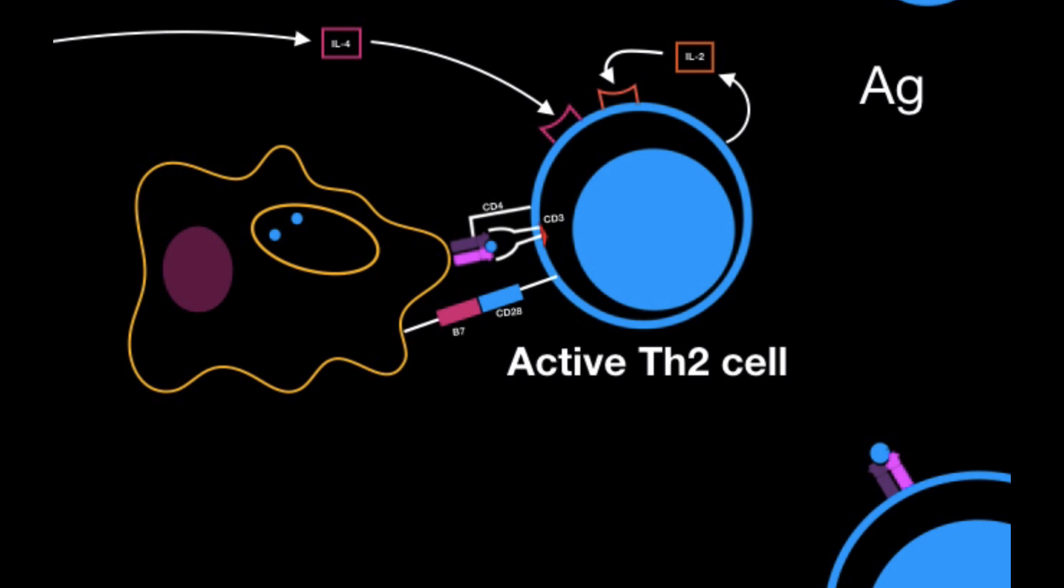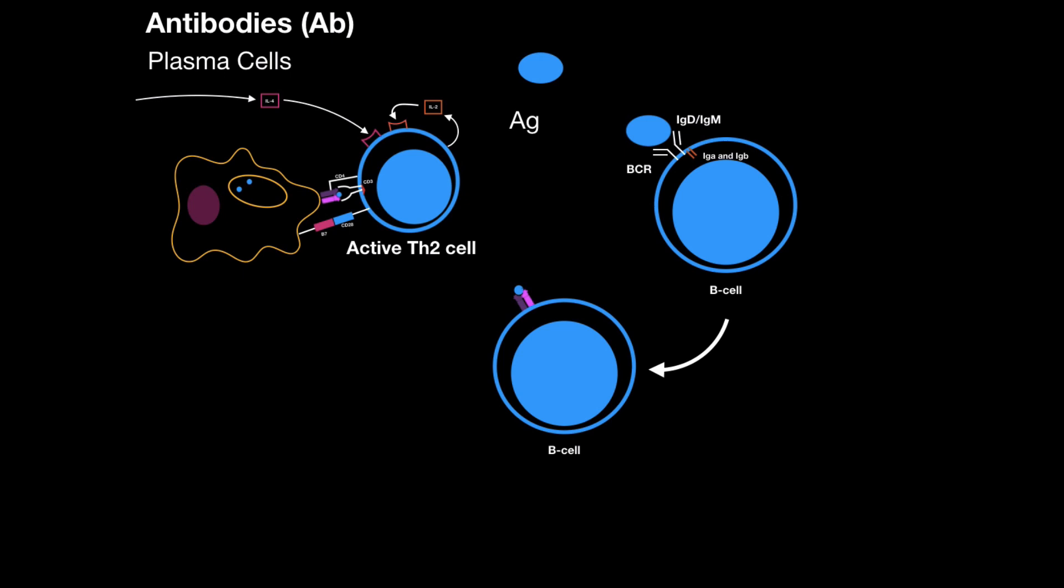It's going to differentiate into many T helper cell 2. Then, after it differentiates and proliferates, it's going to help the initial active B cell to proliferate. Remember, B cells is also an antigen-presenting cell. If this dendritic cell wasn't there, this B cell could do exactly the same as what the antigen-presenting cells did to the naive T helper cell. It also expresses B7.